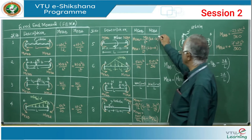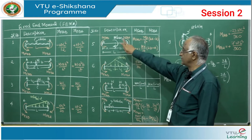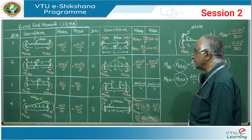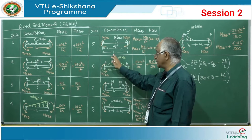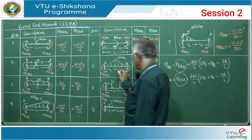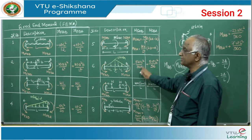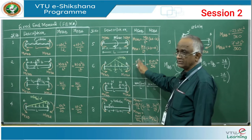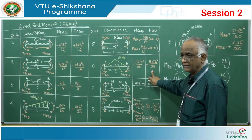For a triangular load starting from zero at both ends with maximum intensity W kN/m at mid-span, both fixed-end moments are equal due to symmetry: M_FAB equals M_FBA equals plus 5WL²/96.